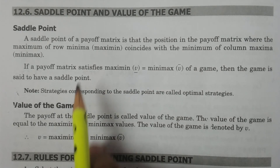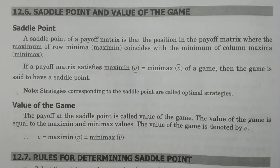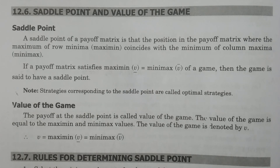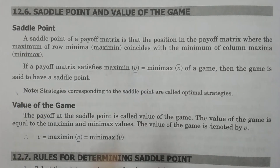The position in the payoff matrix is where the maximum and minimax coincide and are equal. These two particular values — maximin and minimax — coincide and exist at that particular position, which is the Saddle Point.